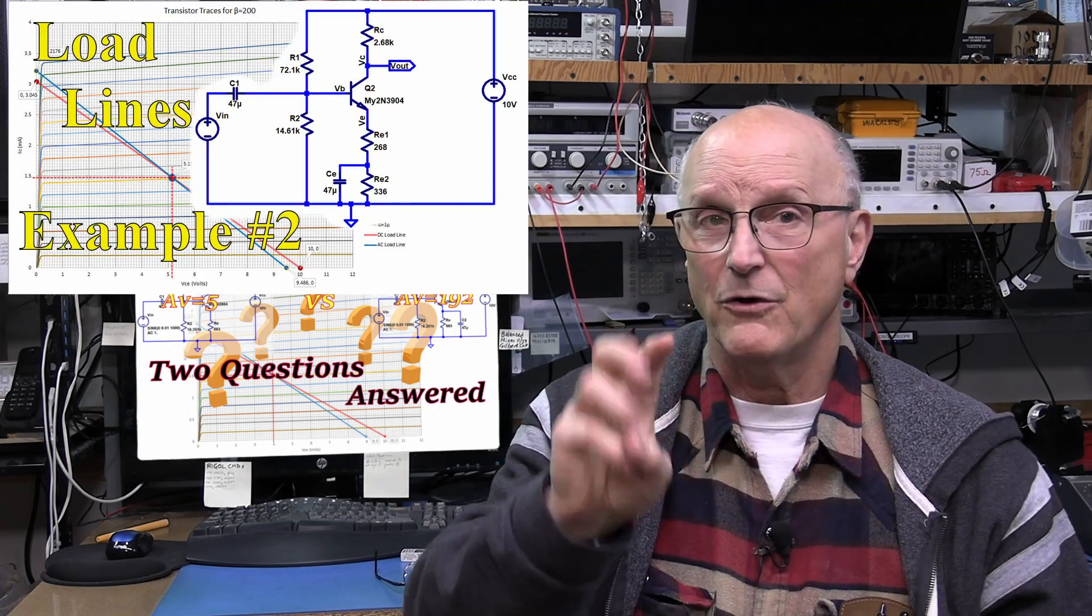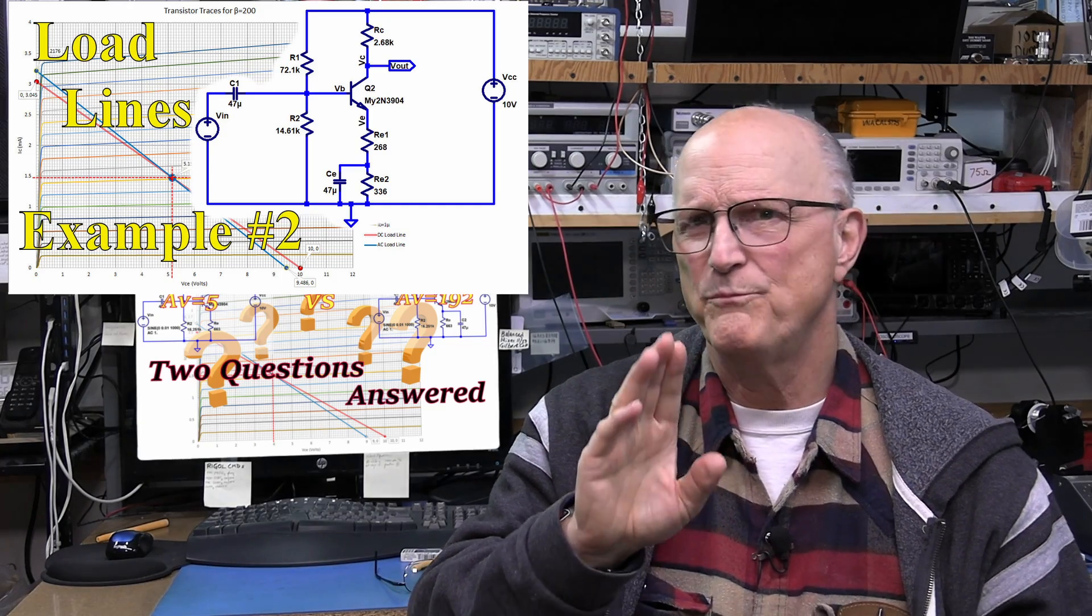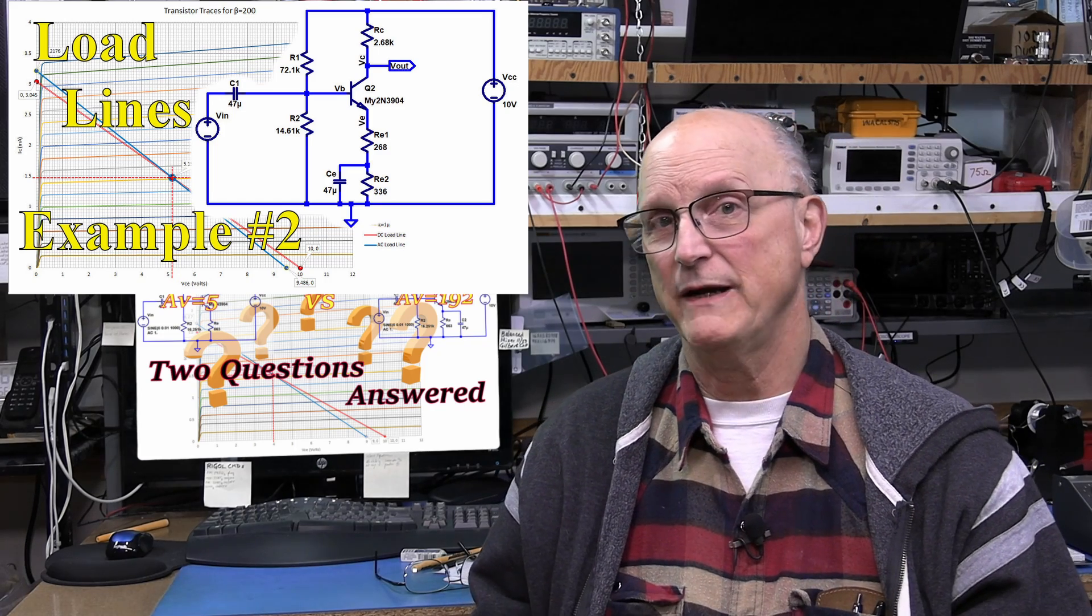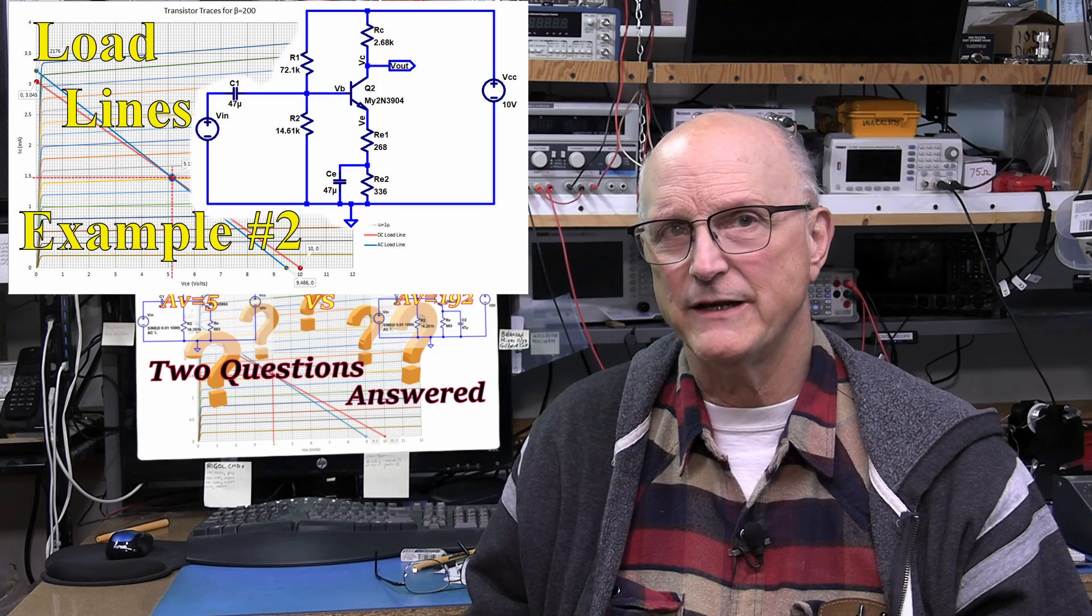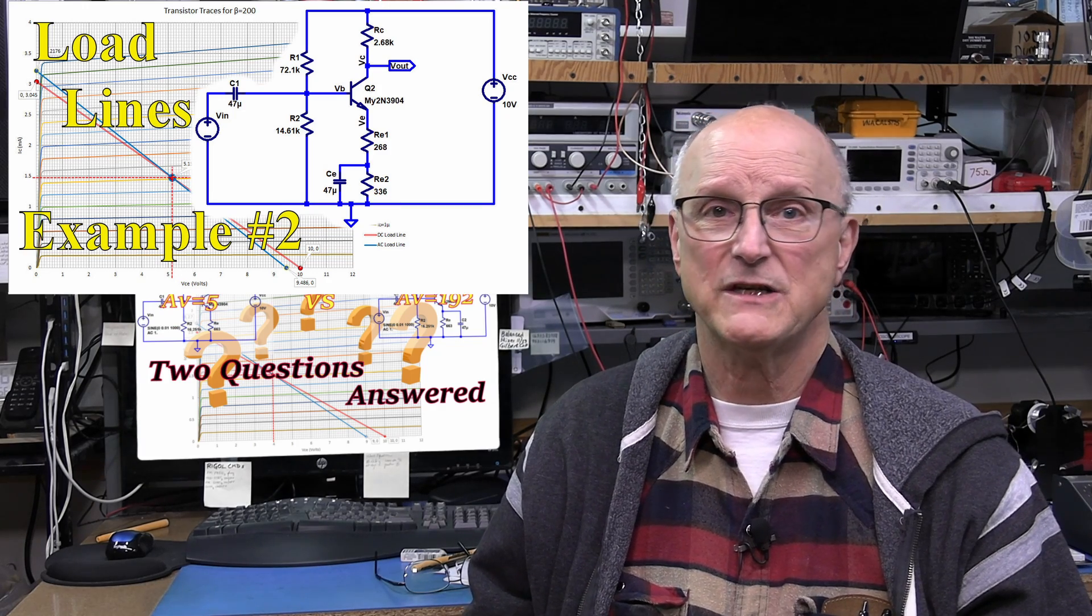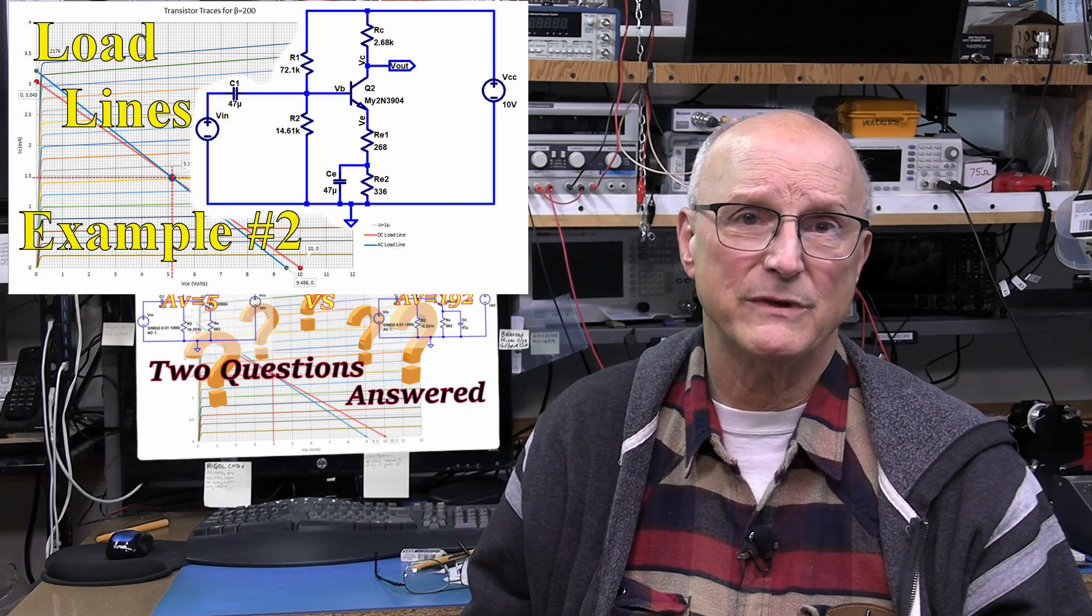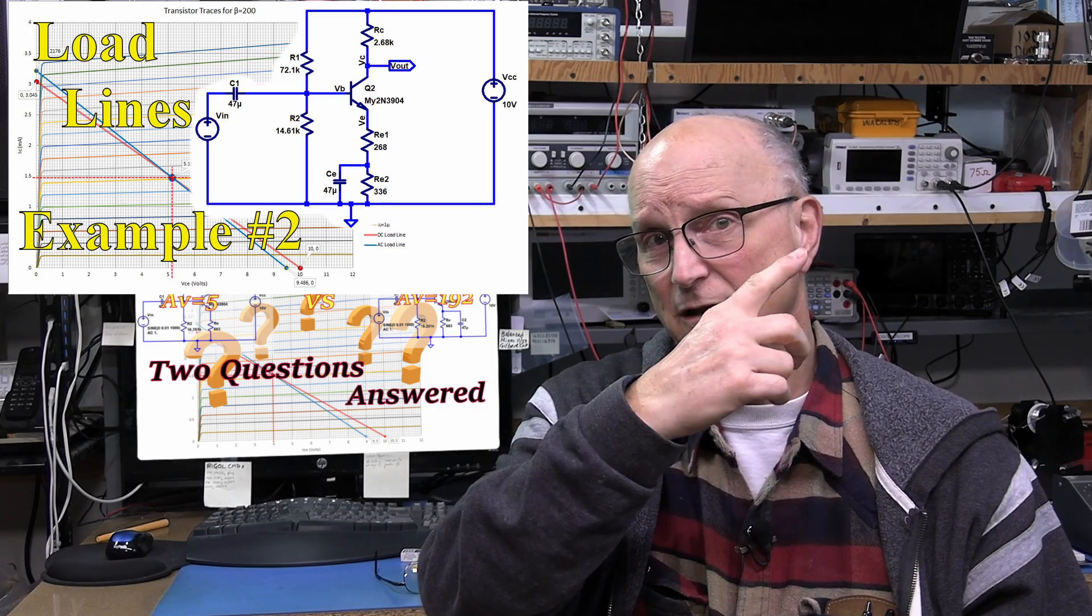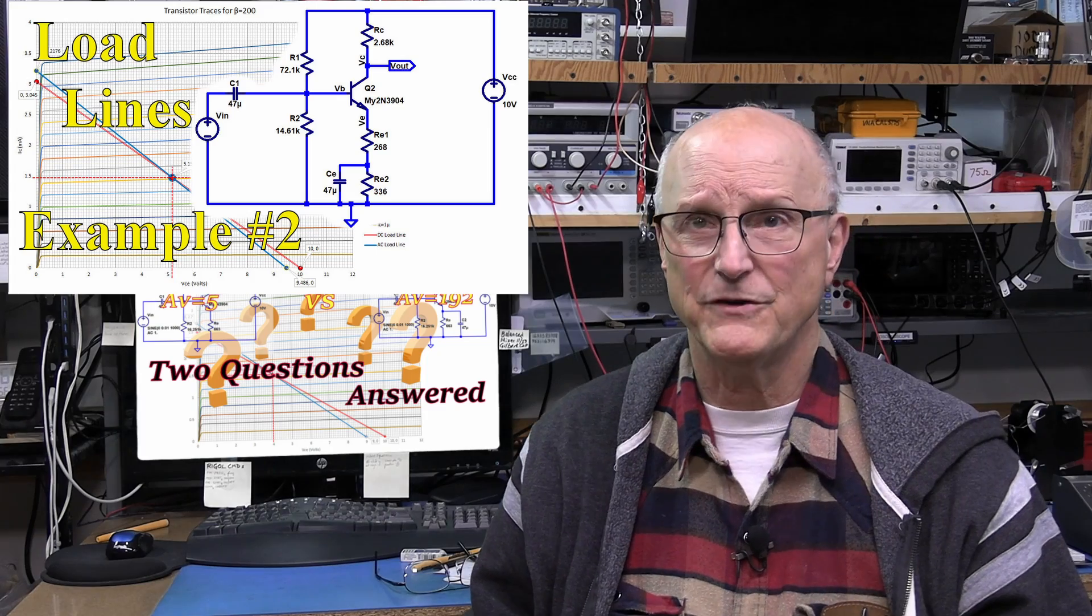In the last video, the third in this series, I took this one step further with a more complex example, which is more in keeping with what you might see. I developed the DC and AC load lines for a beta-stabilized common emitter transistor circuit with a split emitter resistor. Just like the other two, I've put a link to that video up in the corner and down in the description.